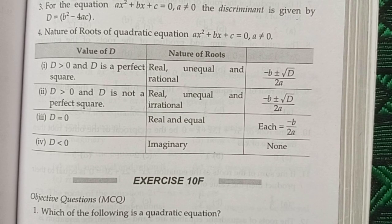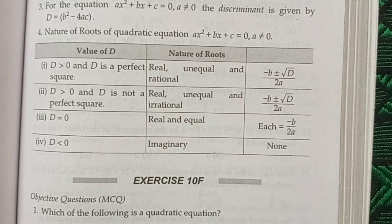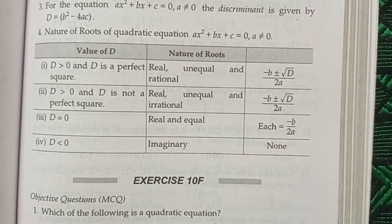The discriminant of a quadratic equation is b squared minus 4ac. If d is greater than 0 and d is a perfect square, then the nature of the roots are real, unequal, and rational. If d is greater than 0 and d is not a perfect square, then the nature of the roots are real, unequal, and irrational. If d is equal to 0, the nature of the roots is real and equal. If d is less than 0, the roots are imaginary.